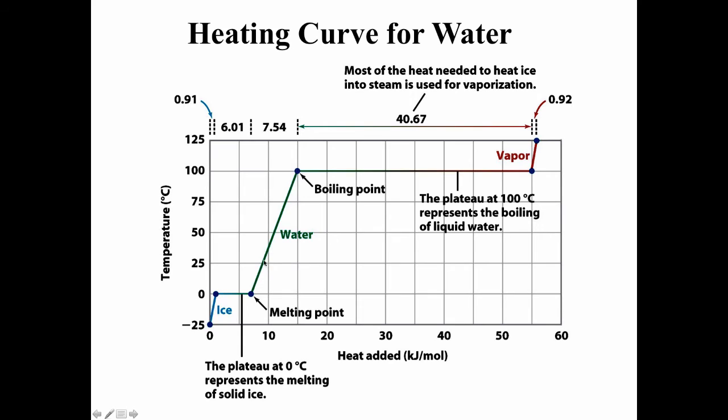As we keep adding heat, the temperature of the water increases. Eventually we hit 100 degrees Celsius, at which water starts boiling. Temperature stays constant while the water boils, even though more heat is added. And then eventually all of the water or liquid has turned into steam or water vapor. And now we keep adding heat, and the temperature of the vapor goes up.